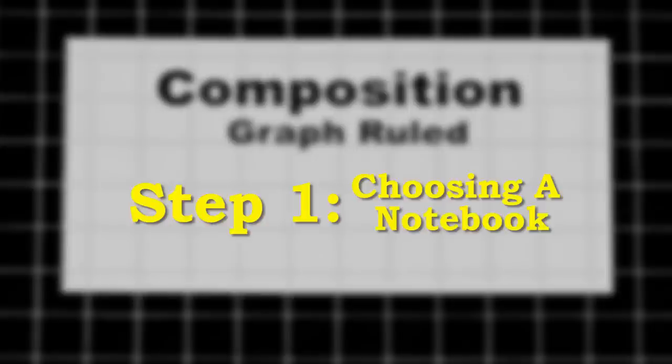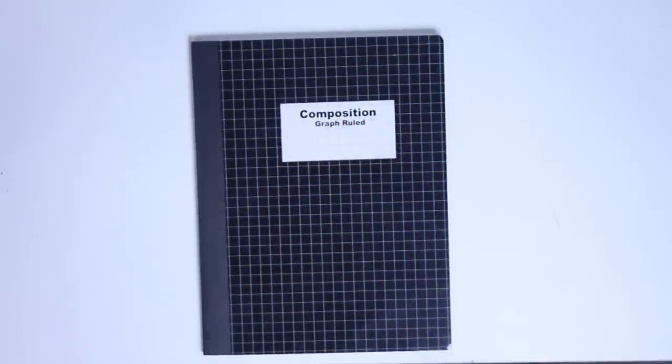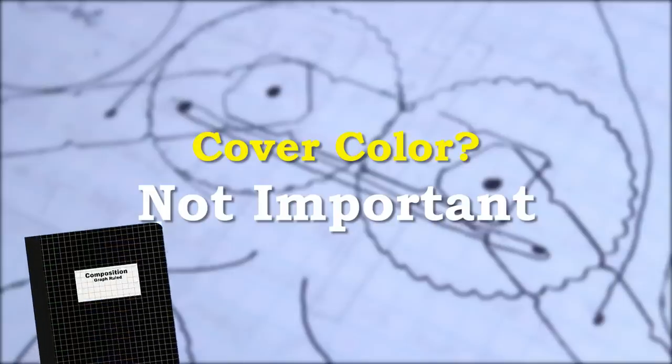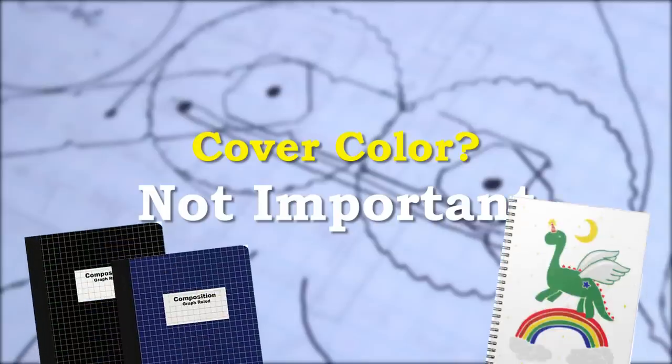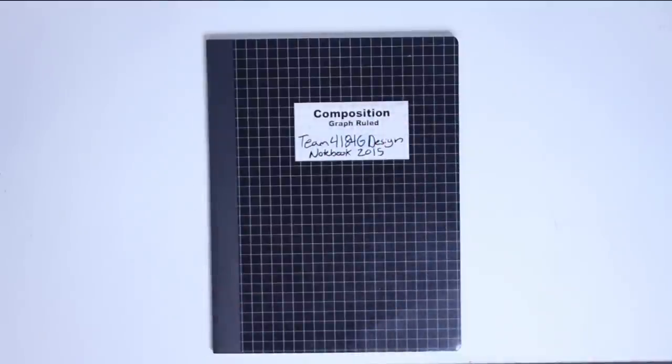That said, step one: choosing a notebook. We recommend a standard-sized graph-ruled composition notebook. You can find them at most any office supply store. It's important that each page has a grid so you can make accurate diagrams. Cover color is not important, but black or blue feels more professional than rainbow dinosaurs. In the title box, you should write your team number and a title with a marker.